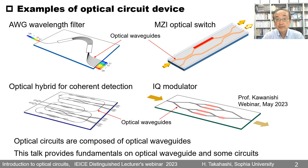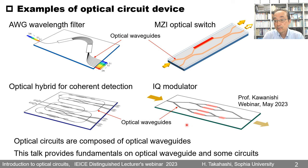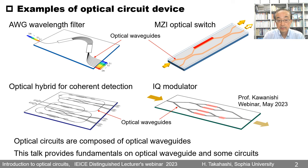This slide shows examples of optical circuit devices — AWG wavelength filters, Mach-Zender interferometer-based optical switches, an optical hybrid for coherent detection, and IQ modulators. These optical circuits are composed of optical waveguides. This talk provides fundamentals on optical waveguides and some circuits.